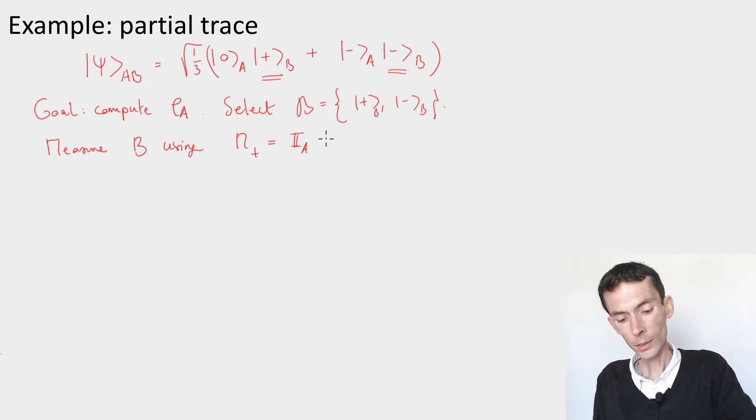M plus, which would be the identity on A, tensored the rank one projection on plus for B. And M minus, which would be, again, the identity on A,